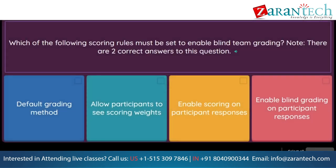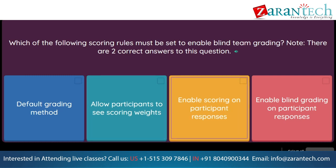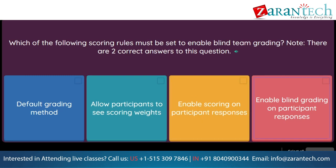Question: Which of the following scoring rules must be set to enable blind team grading? Note, there are two correct answers to this question. Option 1: default grading method. Option 2: allow participants to see scoring weights. Option 3: enable scoring on participant responses. Option 4: enable blind grading on participant responses.